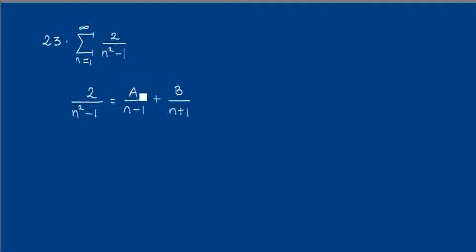...as A over n minus 1 plus B over n plus 1. If we multiply both sides by n squared minus 1, the left hand side we have 2, and A over n minus 1 multiplied by n squared minus 1 will be A times n plus 1 plus B times n minus 1.